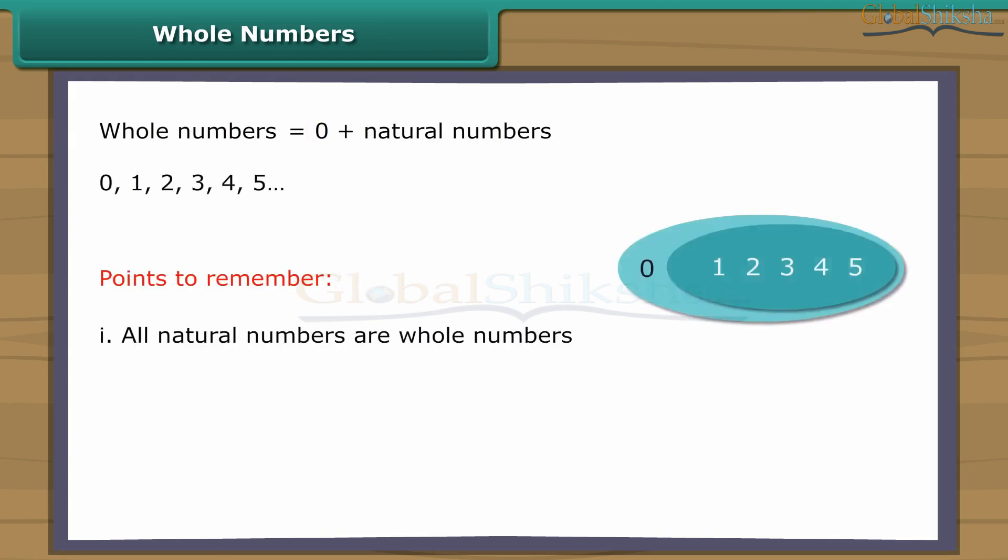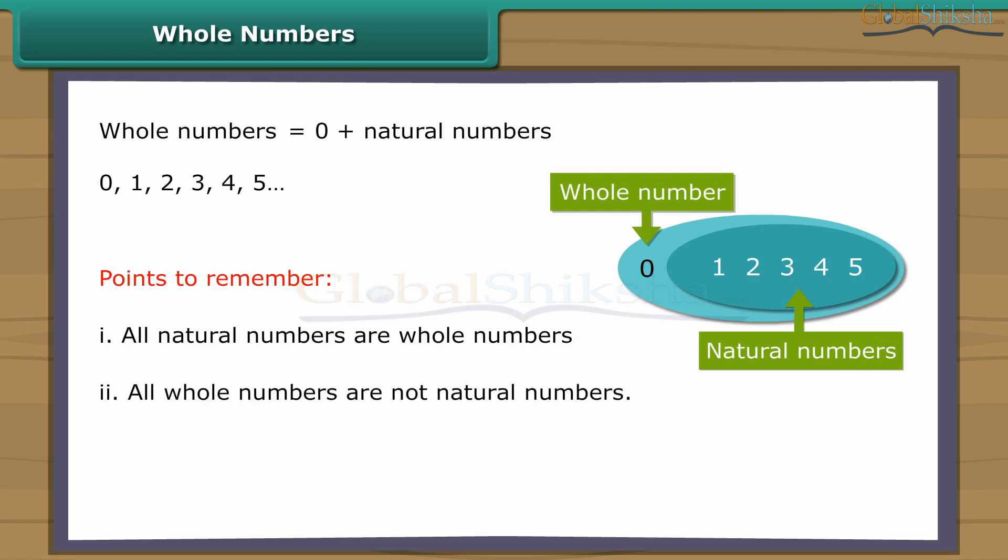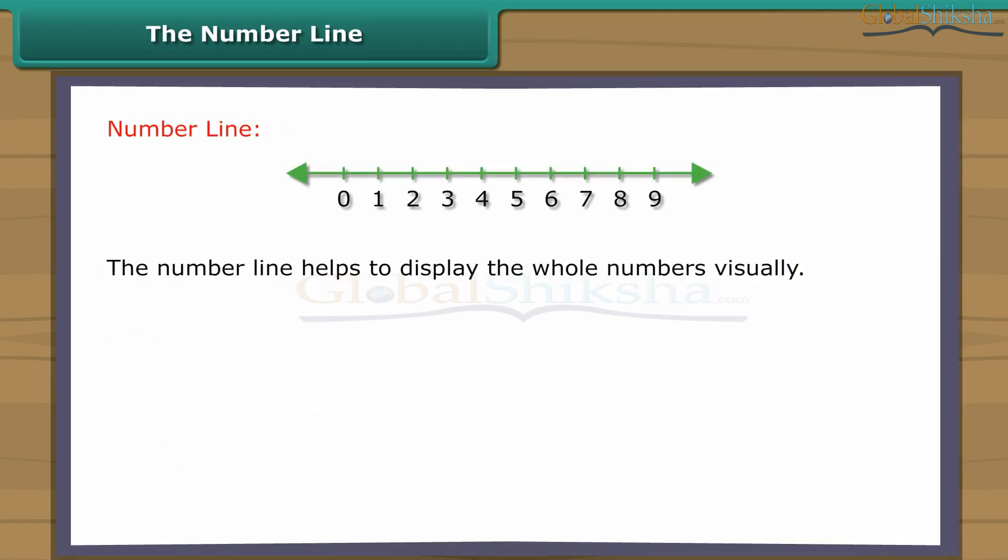Whole numbers. Whole numbers include zero and all the natural numbers. Points to remember: One, all natural numbers are whole numbers. Two, all whole numbers are not natural numbers. Three, there is no largest whole number.